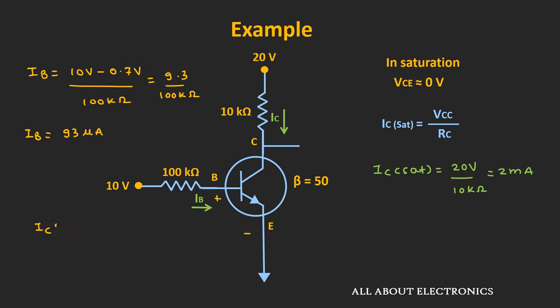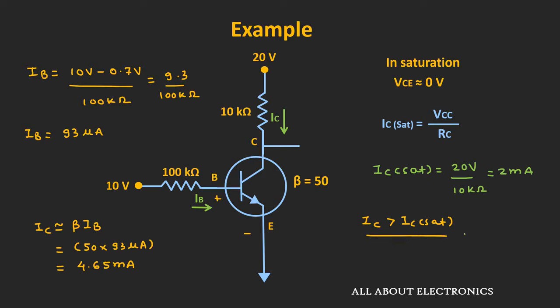Let's assume that the transistor is operating in the active region. That means the collector current Ic can be given as β times Ib. So this collector current Ic is equal to 50 times 93μA, that is equal to 4.65mA. And if you see, the value of this collector current Ic is greater than Ic(sat), because here the value of Ic(sat) is equal to 2mA. That means we can say that the transistor is operating in the saturation region. In this way, we can find out whether the transistor is operating in the saturation region or the active region.